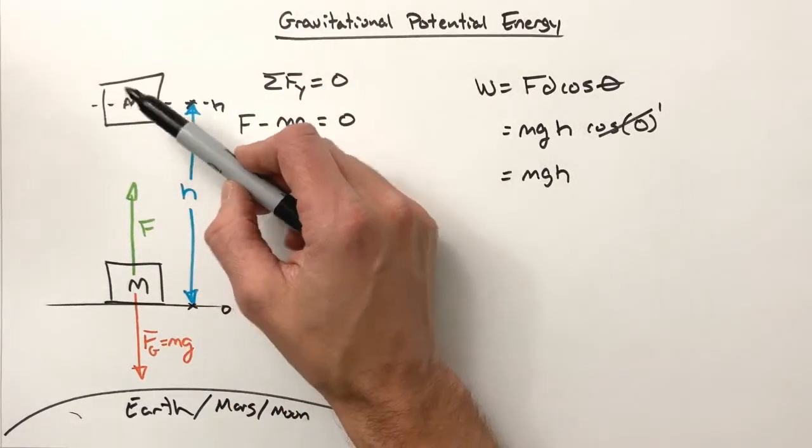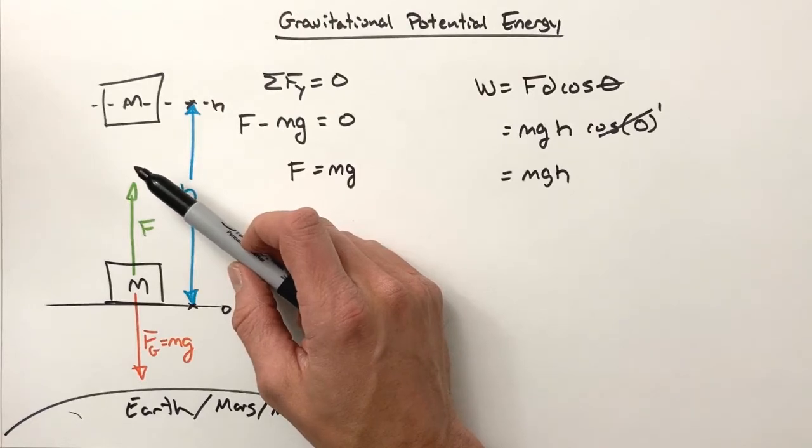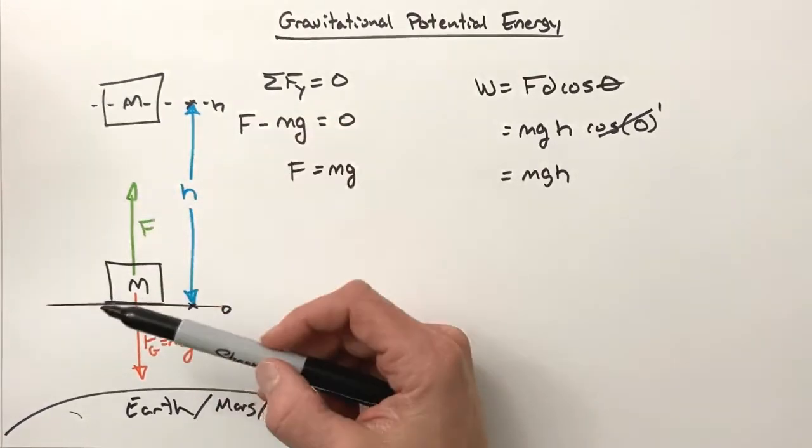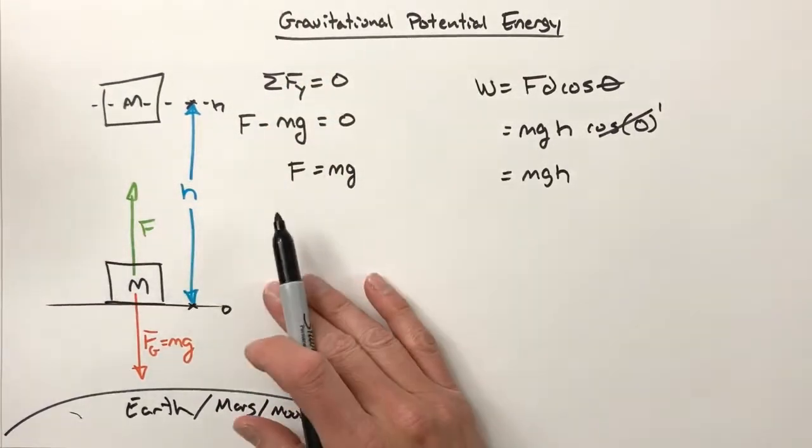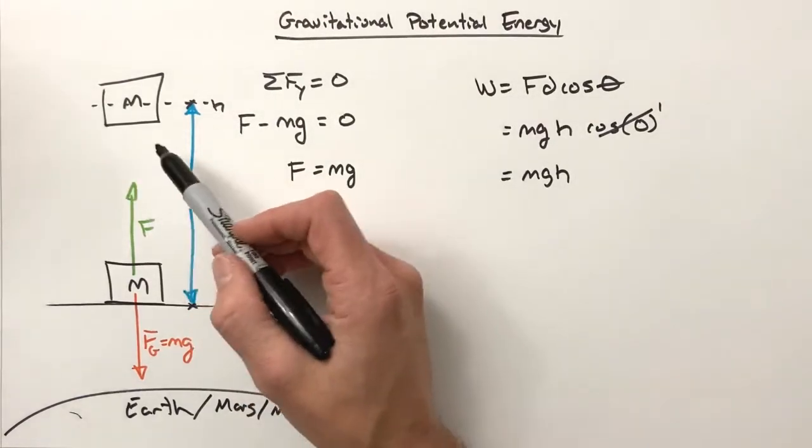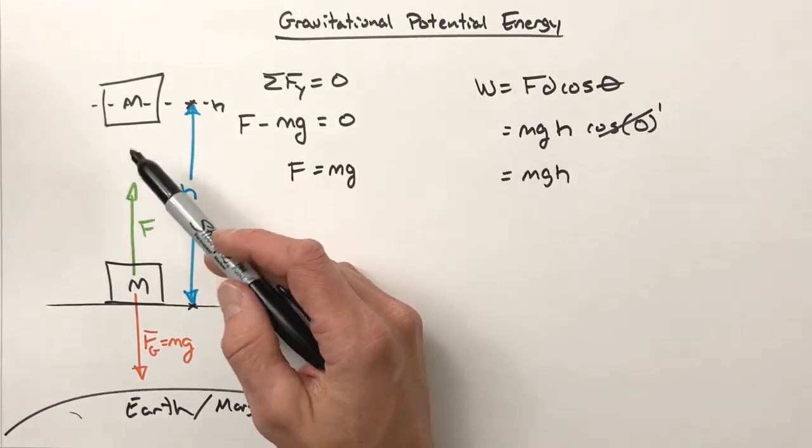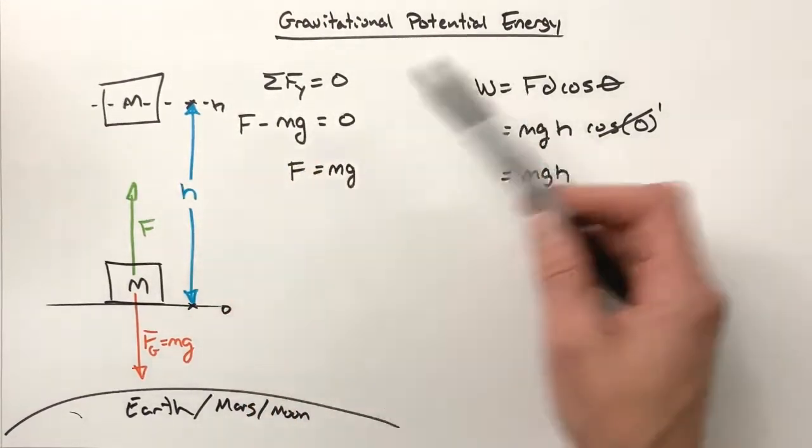And so as the block falls, it's speeding up and it's going to gain kinetic energy. Well, if the block is speeding up, gaining kinetic energy because velocity is increasing, that energy had to come from somewhere. We've all been paying attention since the sixth grade - we've all learned about the conservation of energy.